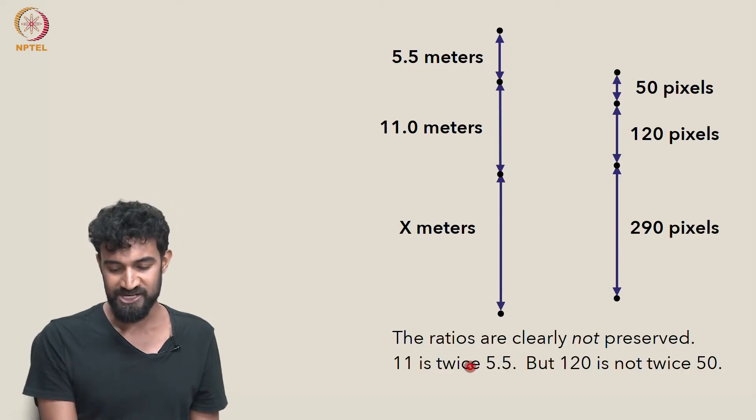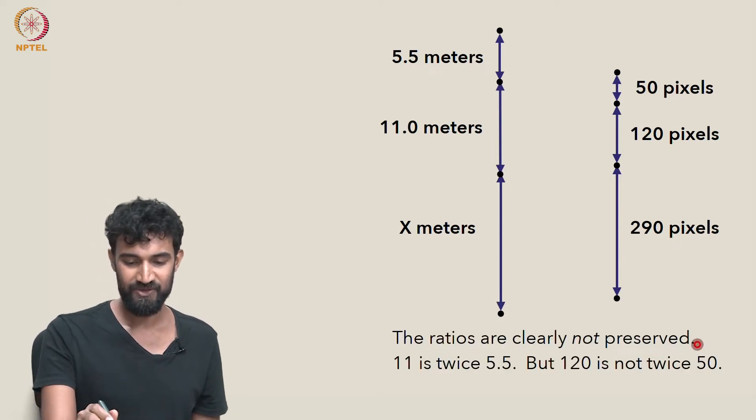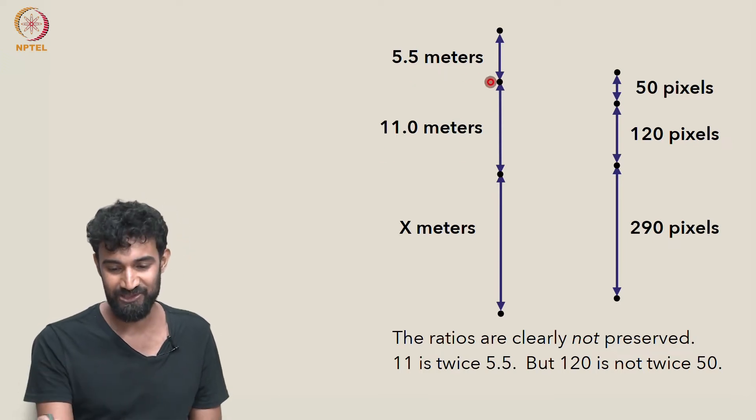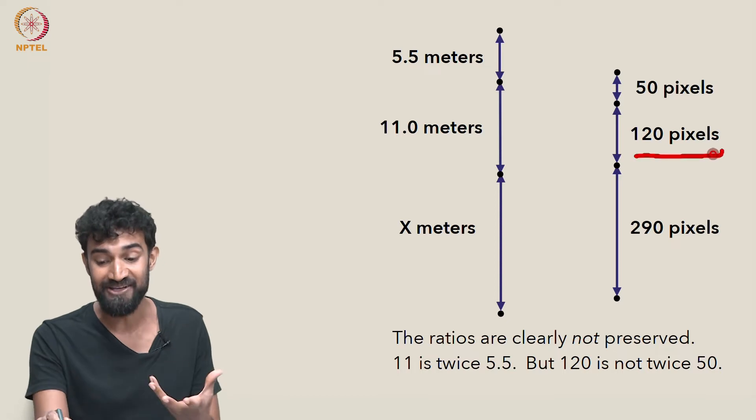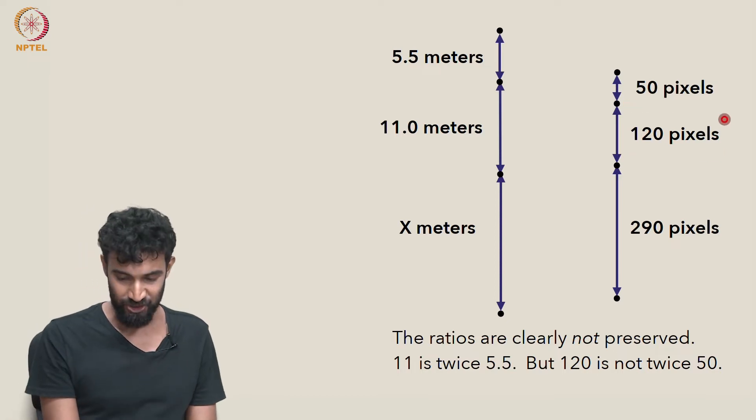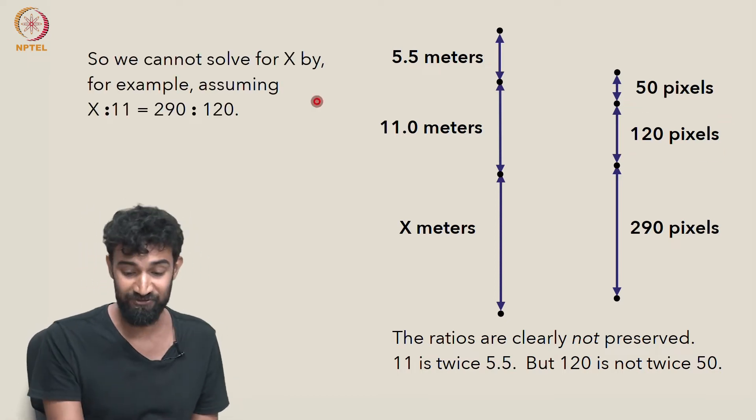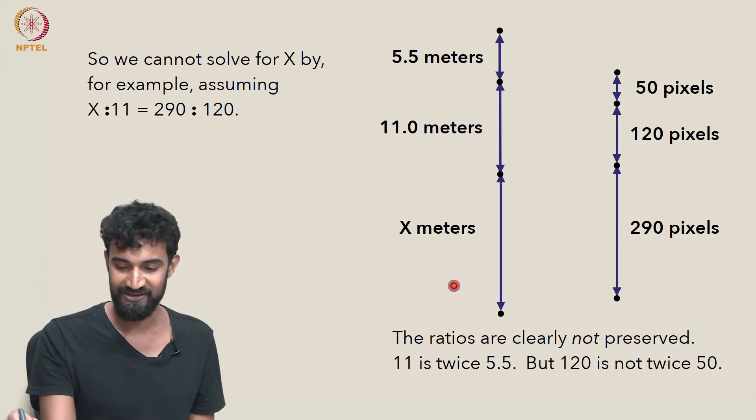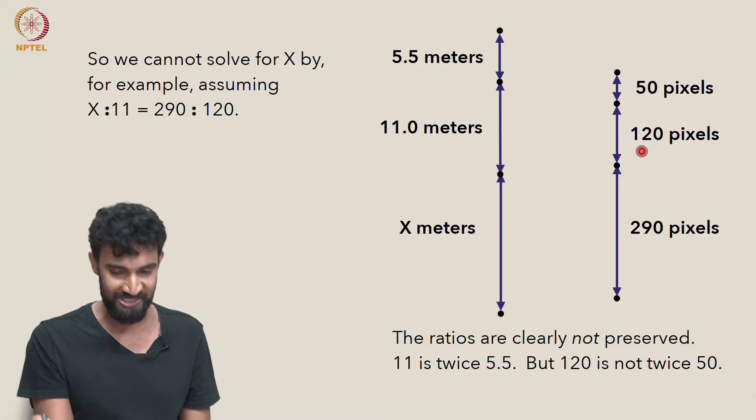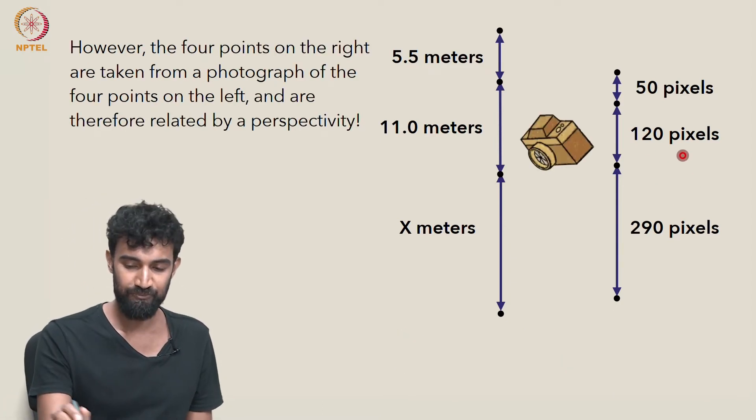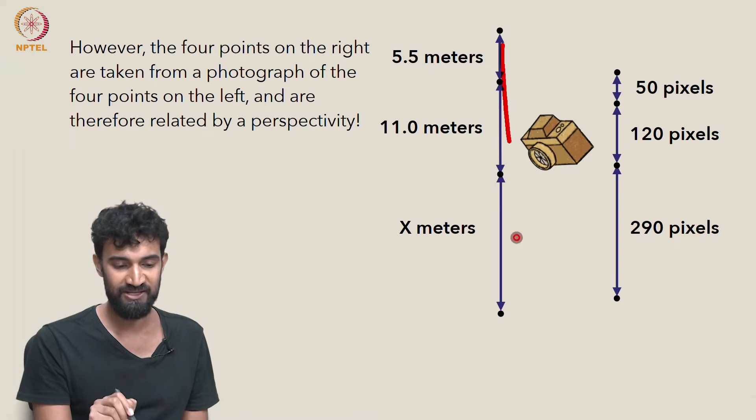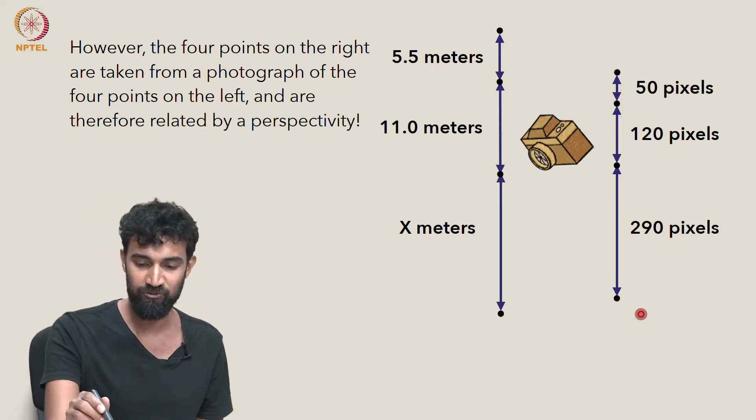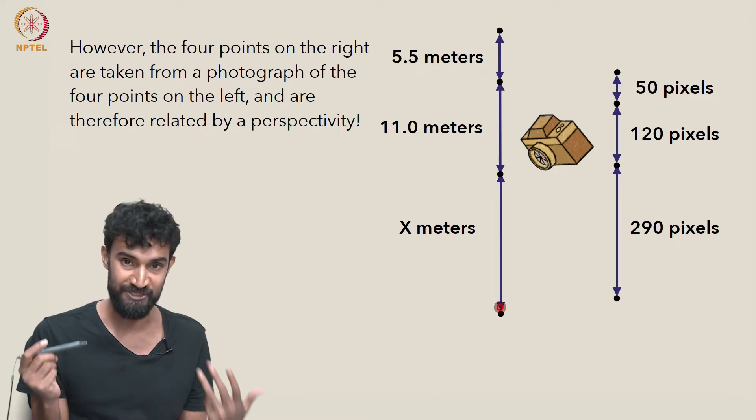But unfortunately, the ratios are clearly not preserved. So 11 is double of 5.5, but clearly, 120 pixels is not double 50 pixels. So we can't solve for x by assuming that the ratio of x to 11 is 290 over 120. That's not going to work. We do know that this is a photograph of this. So these four points on the right-hand side are related to the four points on the left-hand side via a perspectivity.